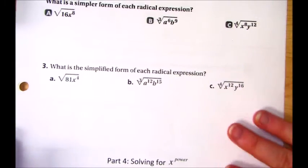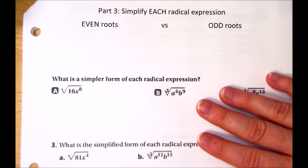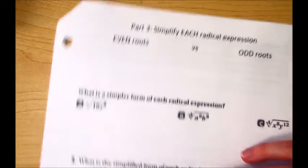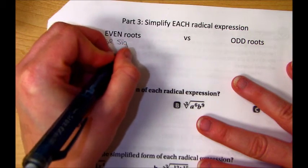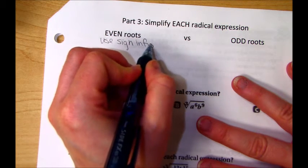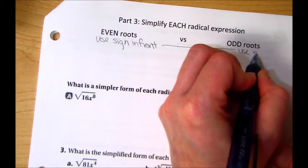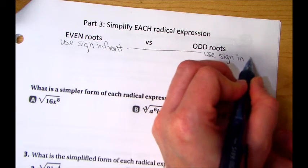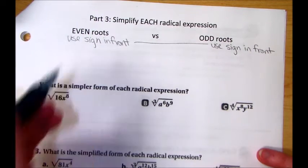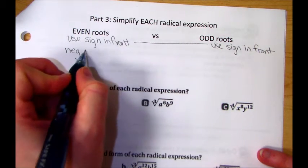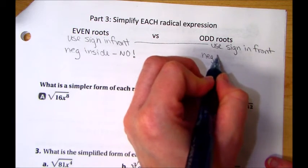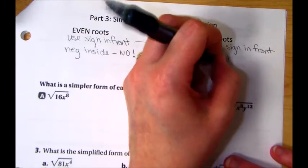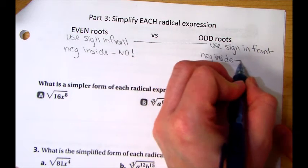Part three of the notes. Part three of the notes is going to say simplify each radical expression. The same idea as part two. So the same rules apply. So whatever the sign is out front. So I'll write use sign out front. Or in front, whatever you want. Same thing over here. Use sign in the front. Even roots, you cannot have a negative inside. So a negative inside is a no. This one, if you have a negative inside, that is okay.